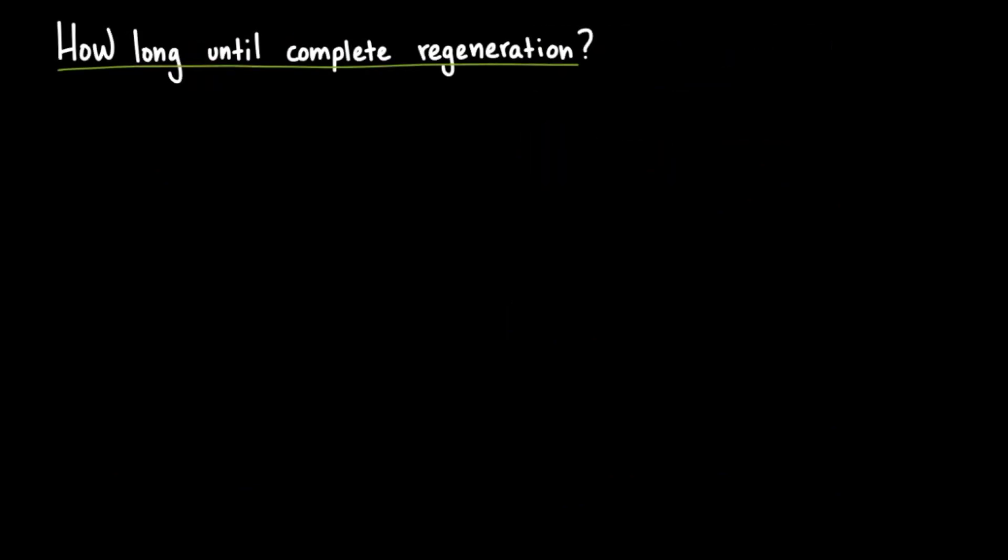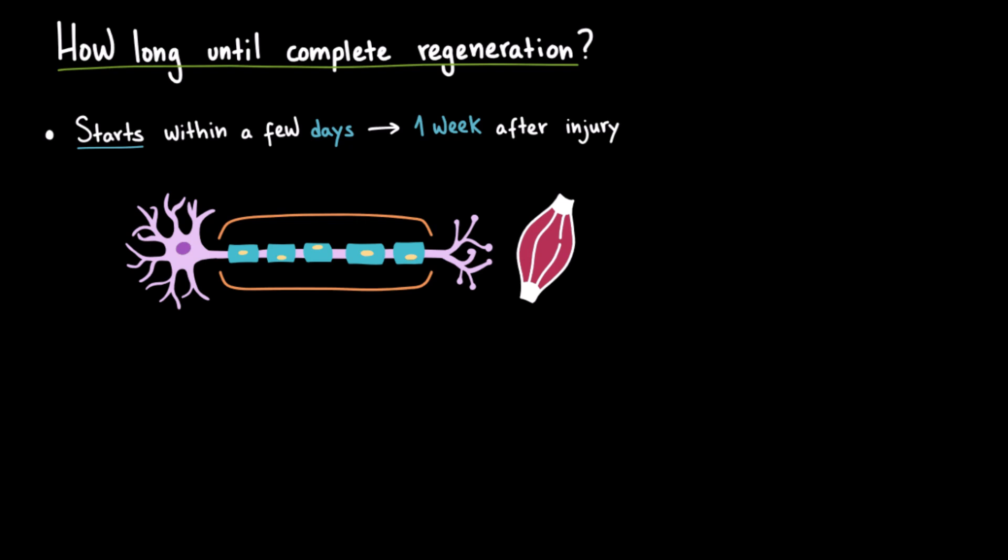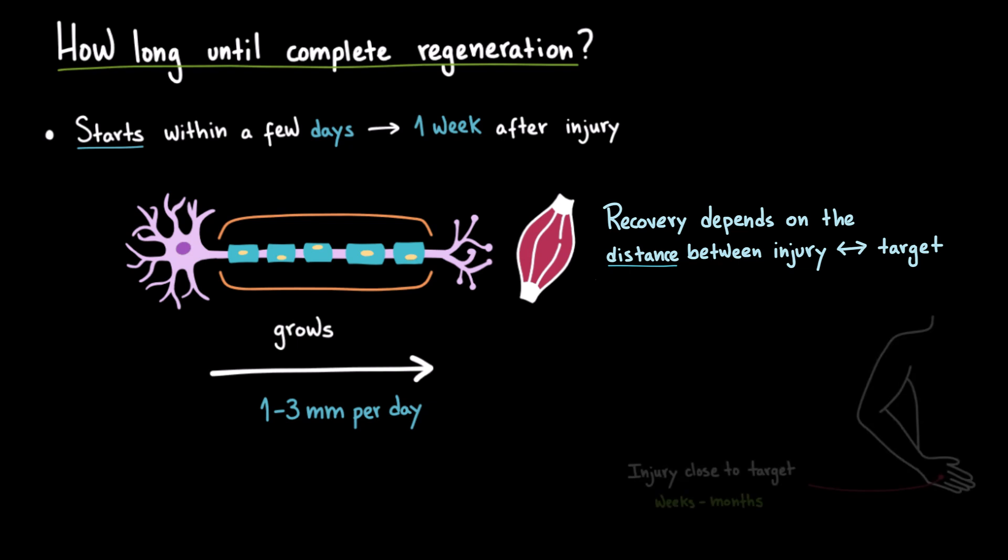How long does this process take? Well, regeneration usually starts within a few days to one week after the injury. On average, peripheral axons regrow at about 1 to 3 millimeters per day. So, this means that recovery depends heavily on the distance between the site of injury and the target muscle or skin. If the injury is close to the target, say a finger nerve, regeneration might reconnect in weeks to a few months.